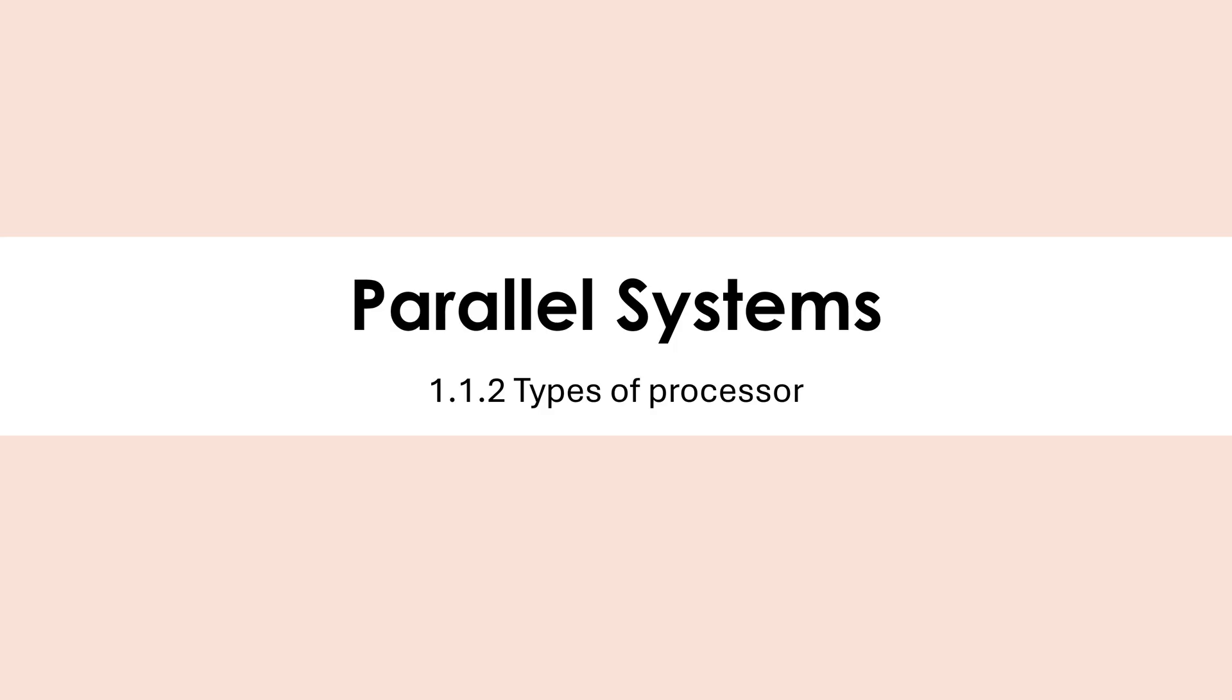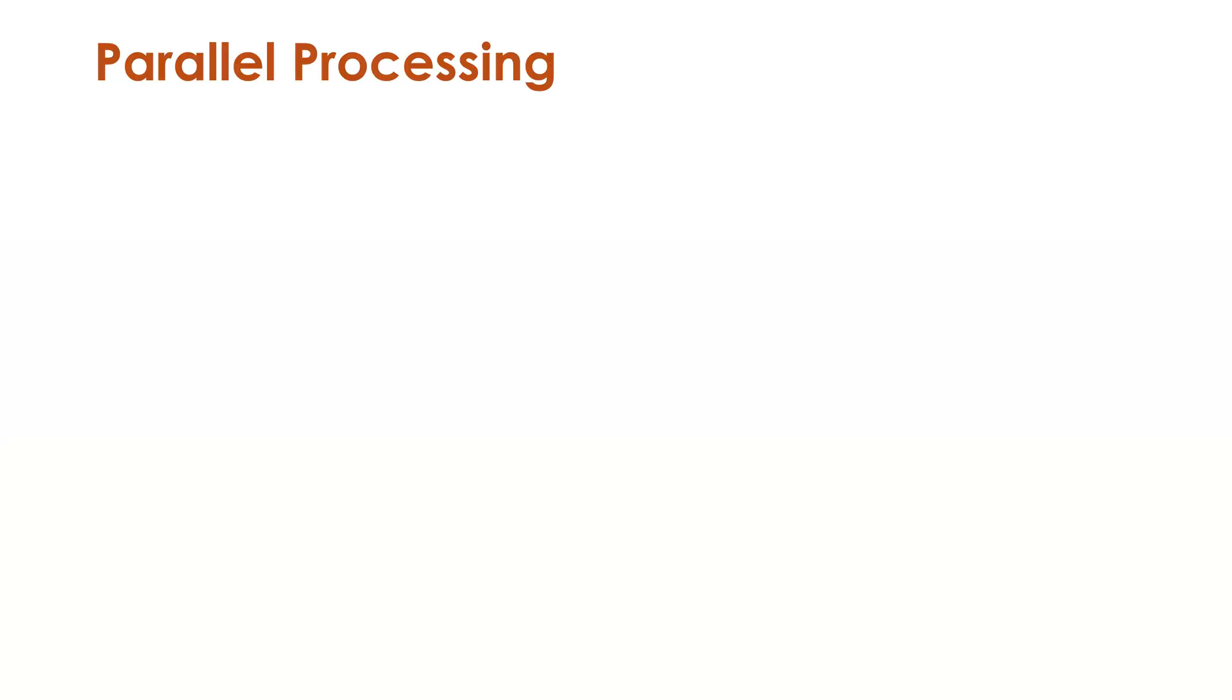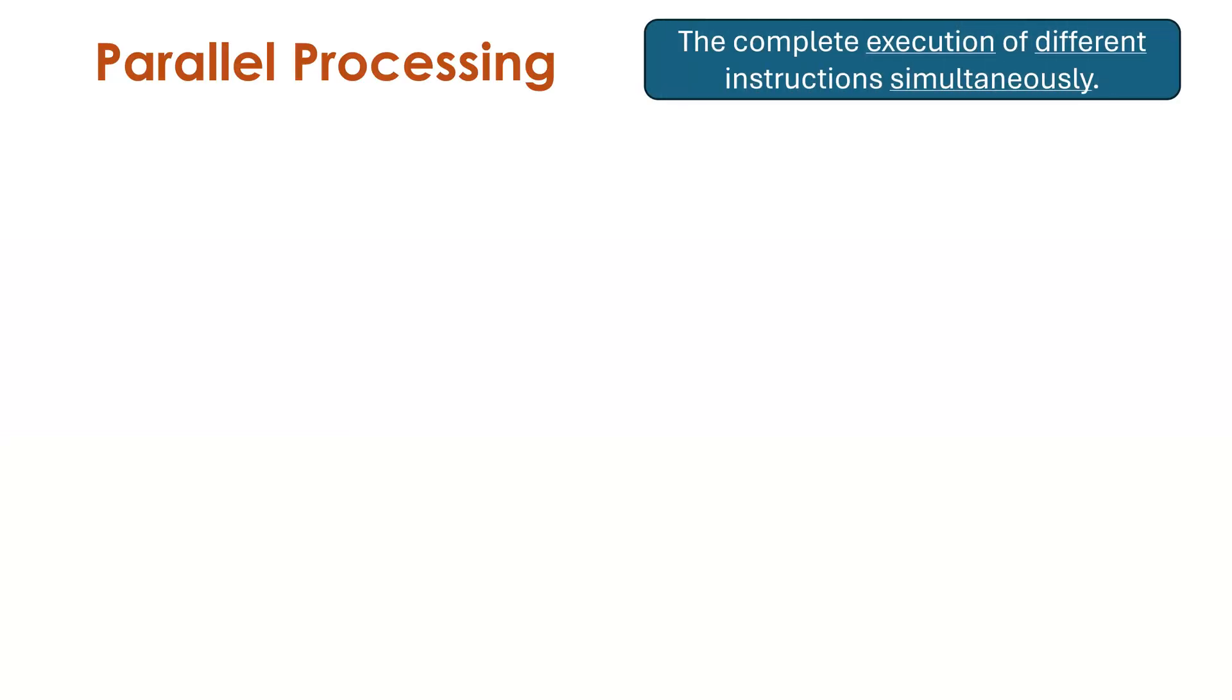Hello, I'm going to be giving you some examples of parallel systems inside and actually outside a computer, and we're going to be talking about parallel processing more generally. This is the complete execution of different instructions simultaneously, simultaneously meaning at the same time.